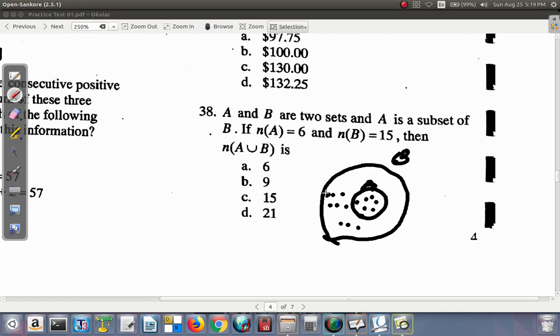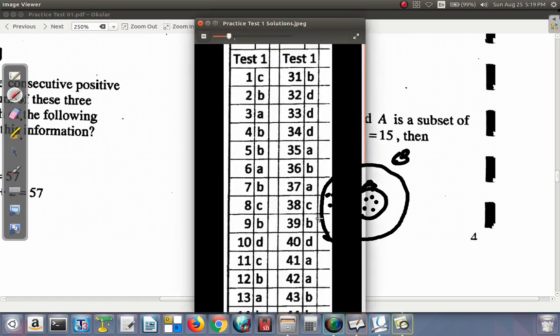So we have 1, 2, 3, 4, 5, 6, 7, 8, 9, 10, 11, 12, 13, 14, 15. It seems that the answer is C for question 38. Question 38 is C.